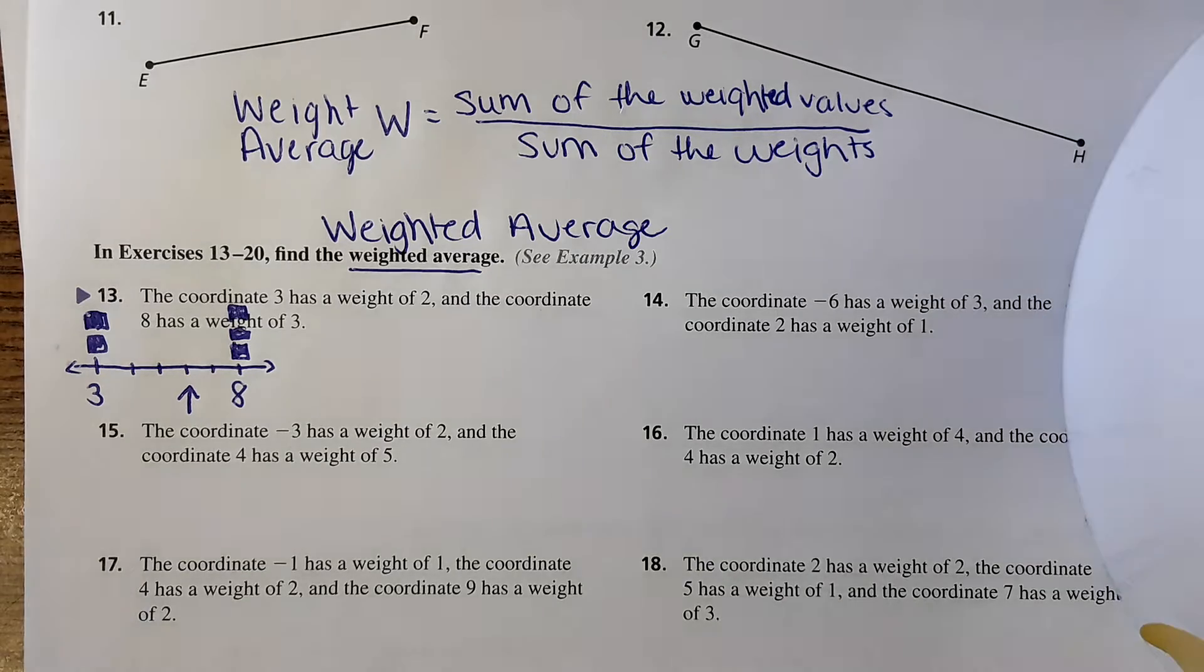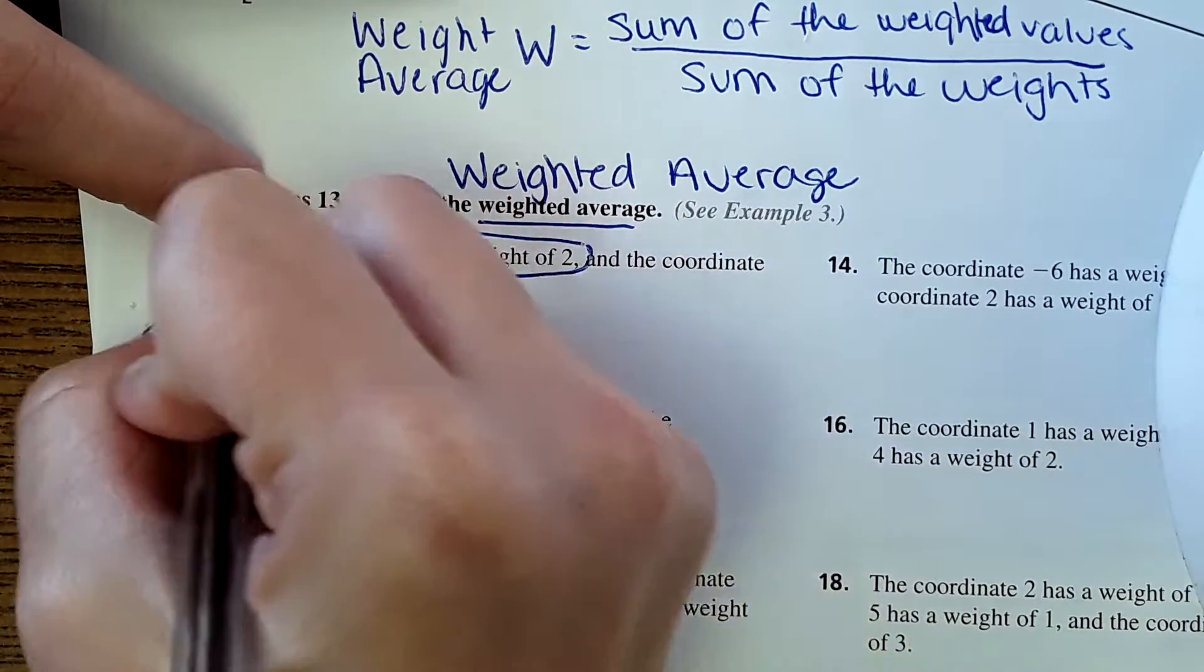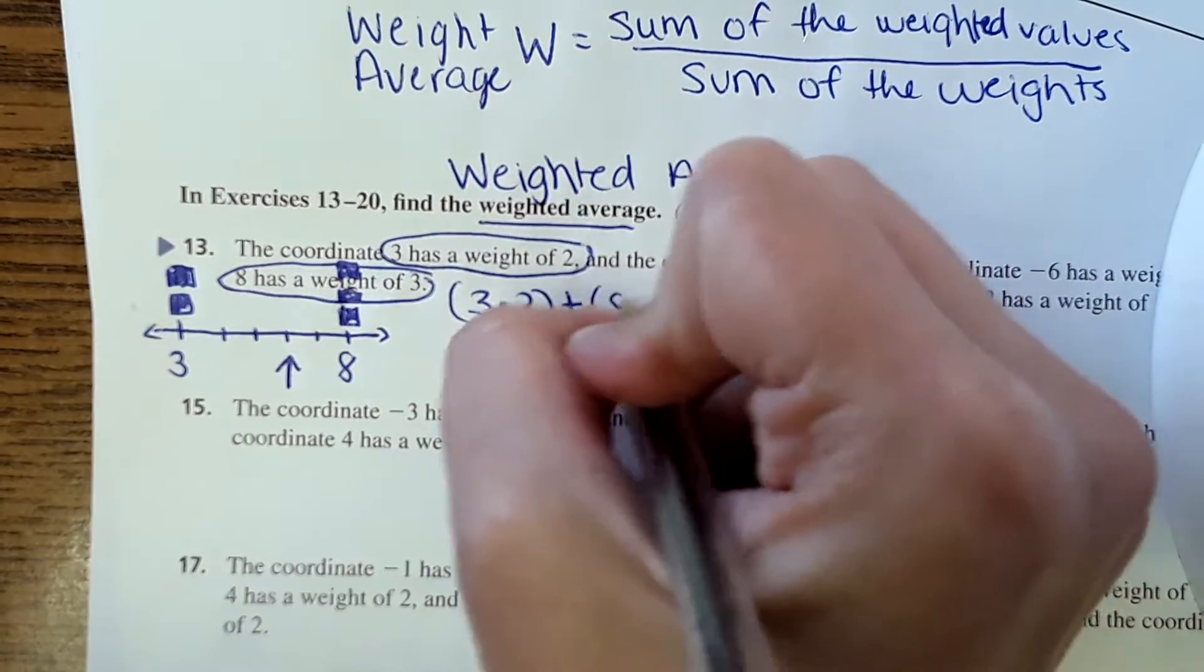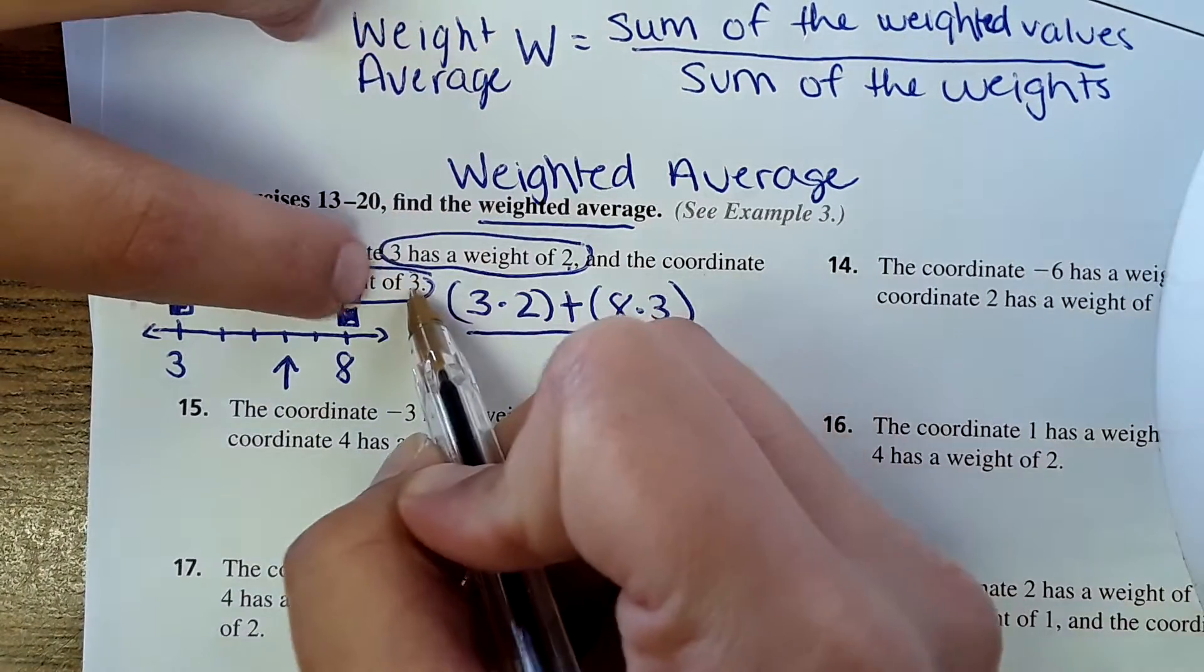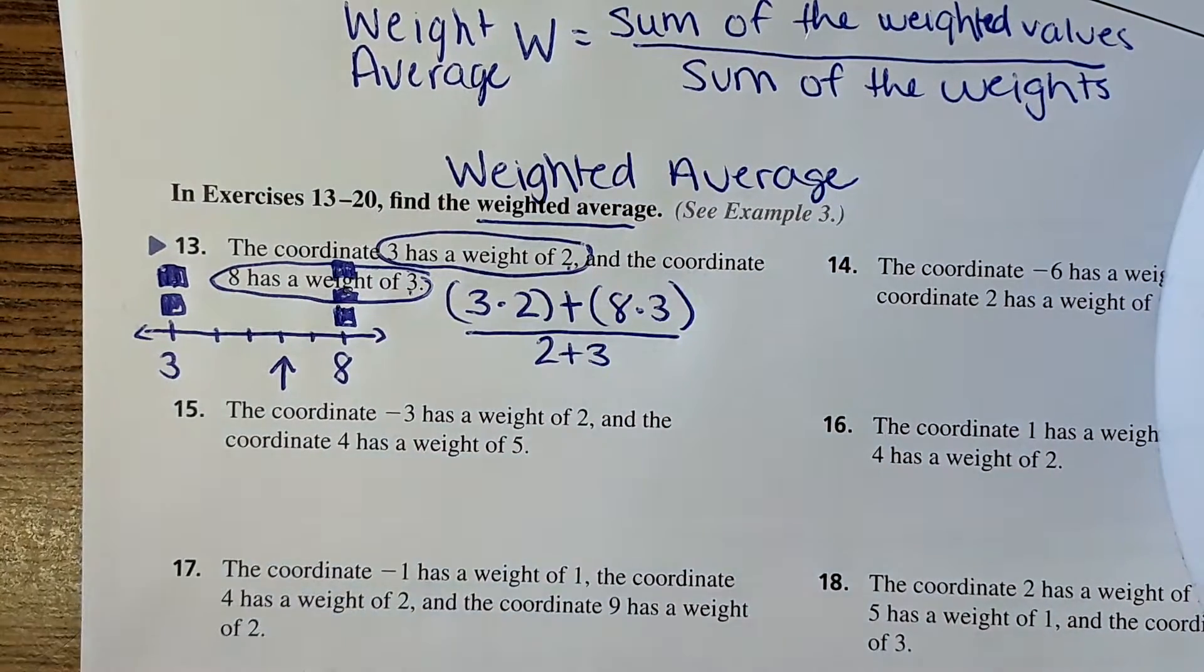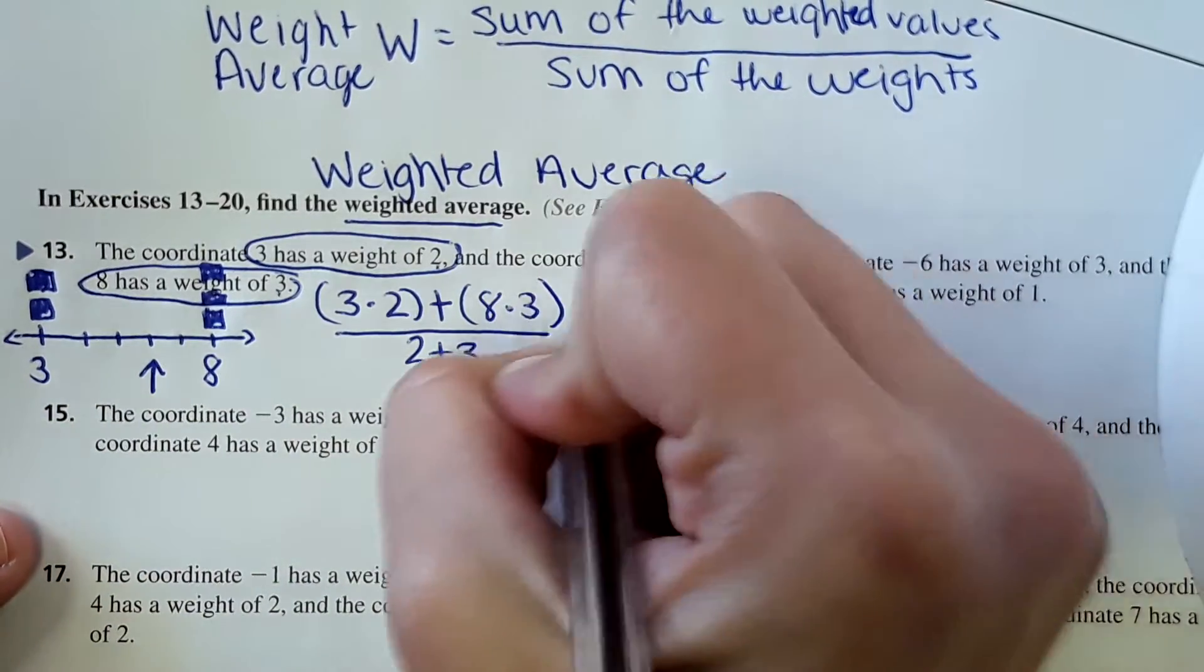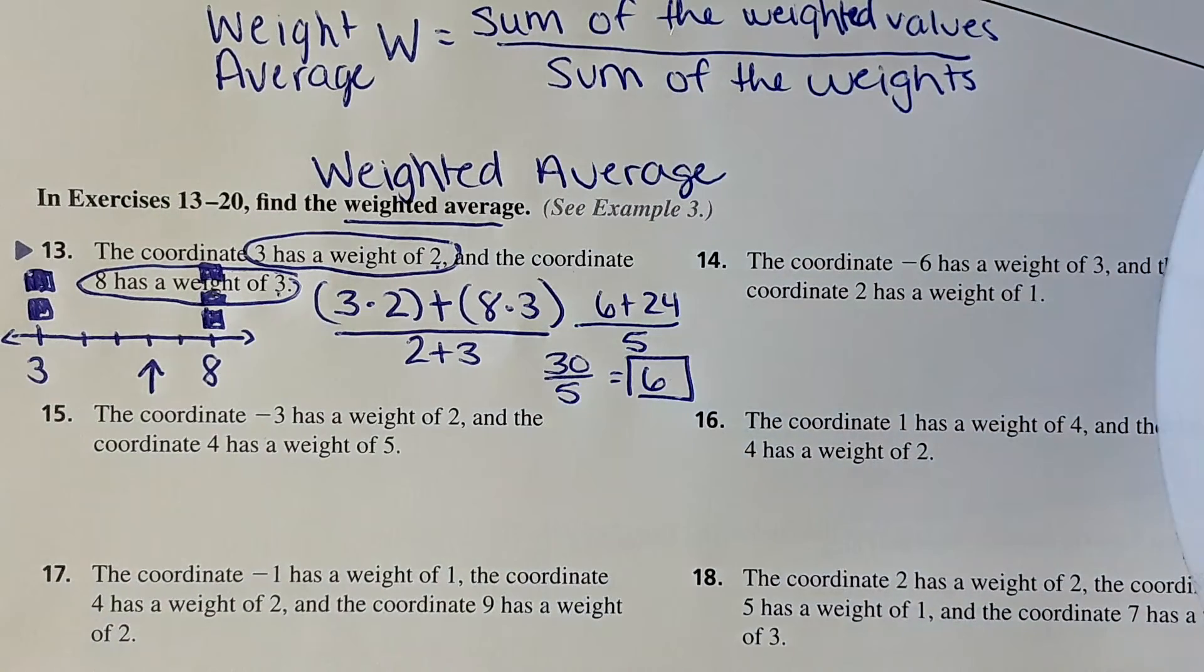So here's what we need to do to solve. We need to multiply the coordinate by the weight here, and this coordinate by this weight. So our equation will look like this: 3 times 2, we're multiplying the coordinate by the weight, plus this coordinate by its weight, 8 times 3. And then dividing by the sum of the weight. So this one has a weight of 2, this has a weight of 3, so 2 plus 3. Now we solve, of course, use order of operations, solve what's in the parentheses first. And we get 6. And that's it.